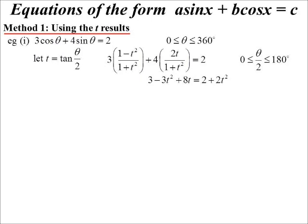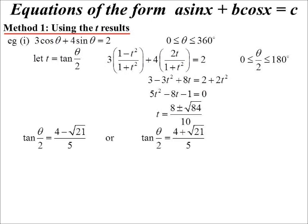Bring it over to one side. There's our quadratic: 5t squared minus 8t minus 1 equals 0. I don't think that factorises nicely, so we're going to use the quadratic formula. So t is 8 plus or minus root 84 over 10, which simplifies to 4 minus root 21 over 5, or 4 plus root 21 over 5.